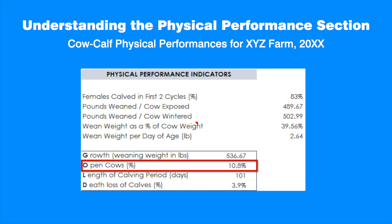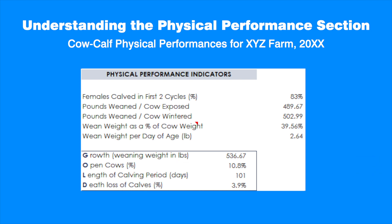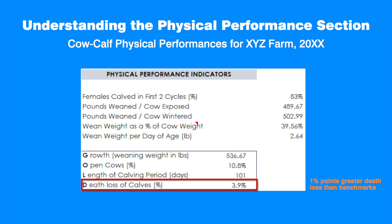The open cows percentage shows the portion of exposed cows not inseminated during the breeding period. In our example, it is 10.8%, meaning 11 of each 100 exposed females were not inseminated. This is 0.6 percentage points higher than the benchmarks. Maintaining open females during the production period is a drain on farm resources. The last indicator is calf mortality — death losses after 24 hours of age — at 3.9%, one percentage point higher than the benchmarks. Death loss is a critical performance indicator for cow-calf productivity and income.